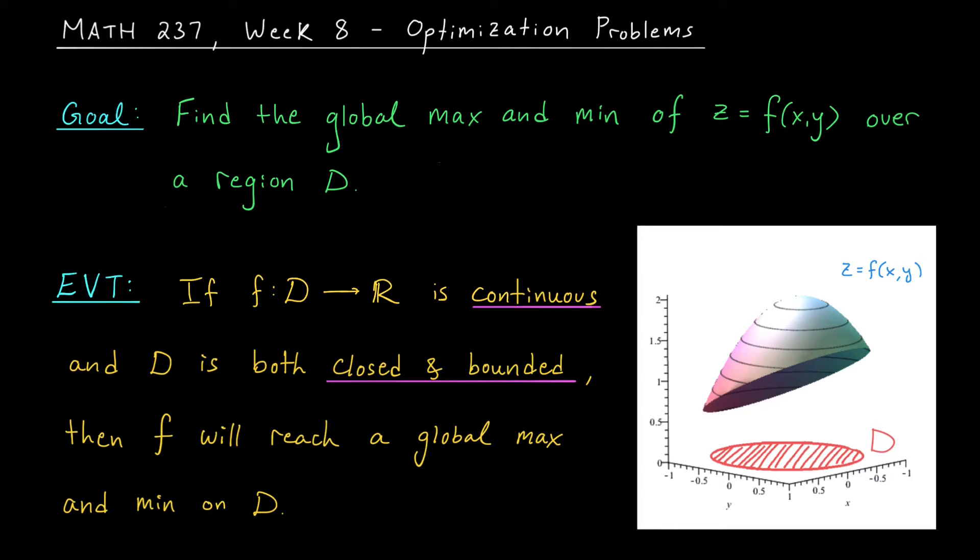Now, in addition to the EVT, we also learned that the global max and min can only occur at a few specific locations throughout your region. To see what's going on here, take a look at this picture on the right. You can see that we're optimizing some continuous function, z equals f(x,y),